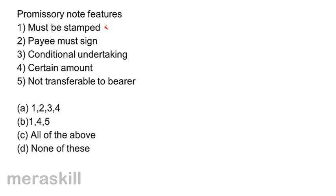Analysis: Promissory note must be stamped — correct. Payee must sign — no, it's the maker or payer who signs, so this is not valid. It is not a conditional undertaking; it's an unconditional undertaking. The amount should be certain, and it cannot be transferable to a bearer. So promissory note features should be 1, 4, and 5. Correct option is B.